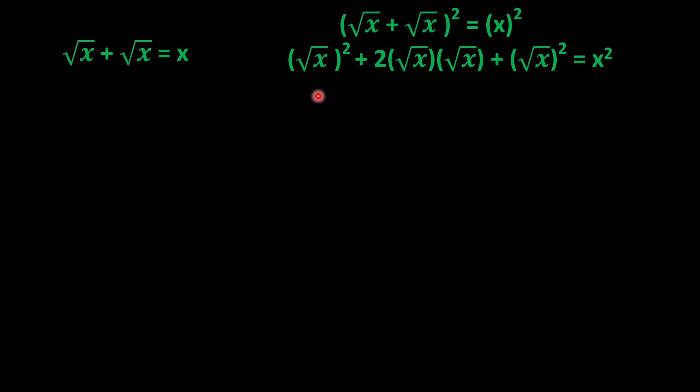This will become x + 2x when √x multiplies with √x, it becomes x, and √x squared equals x. So x + 2x + x equals x². This simplifies to 4x = x².